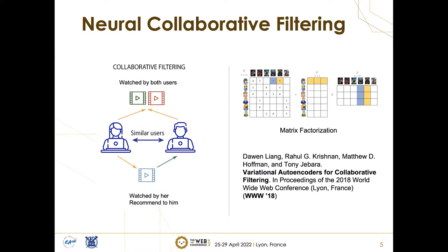A recent model from the Web Conference 2018 proposed a model to overcome this issue by introducing non-linearity thanks to the neural implementation. Our work is motivated by this work applying neural networks to collaborative filtering, especially based on variational autoencoder.